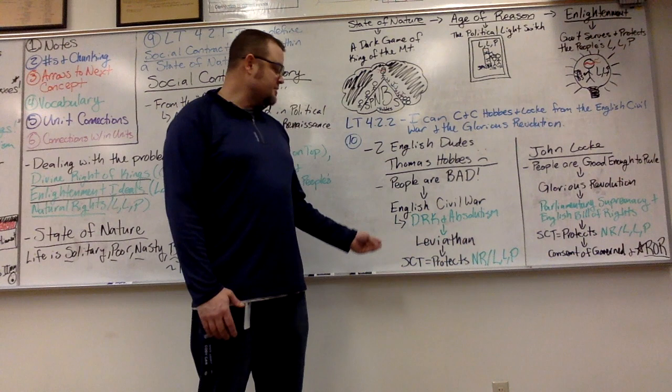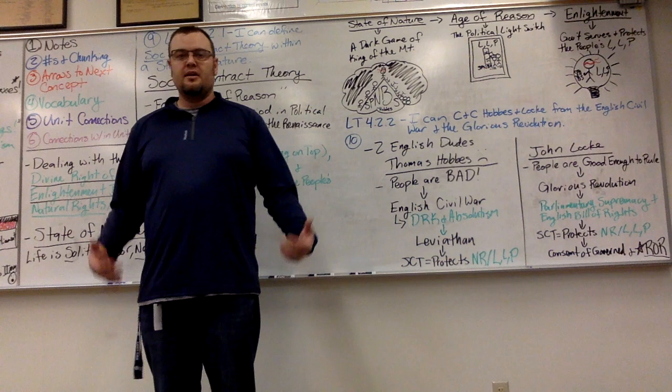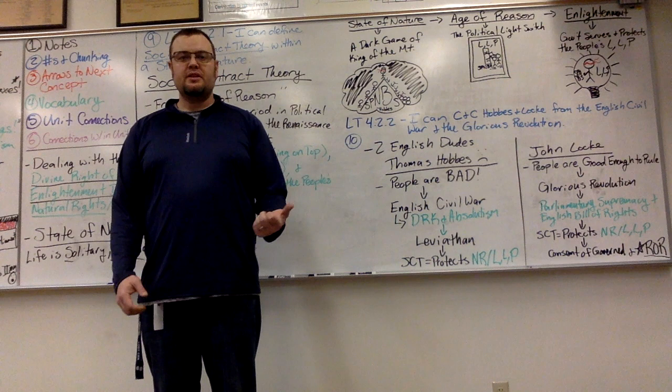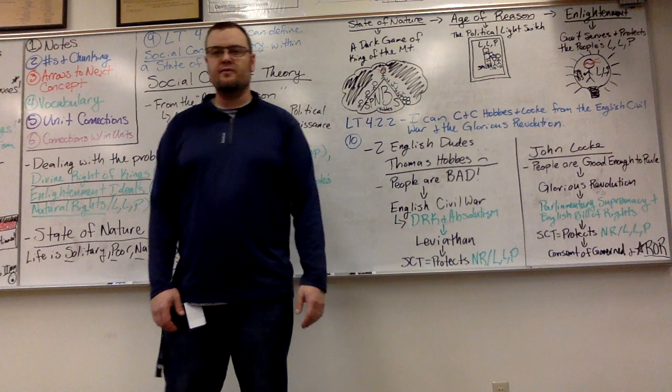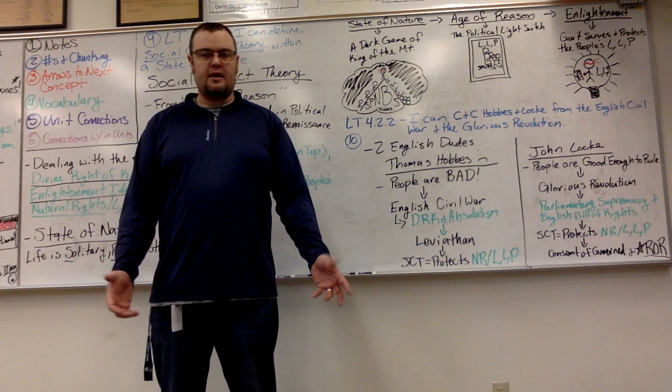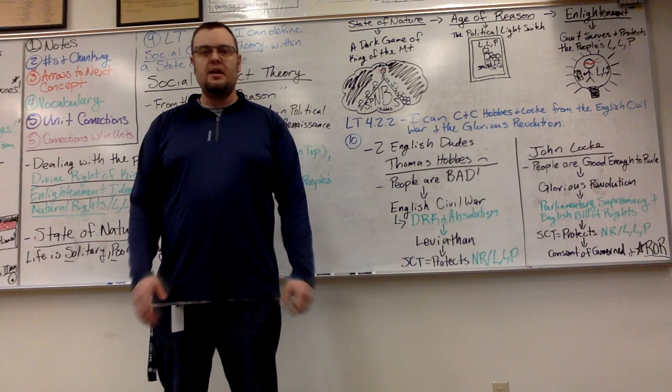When he talks about Leviathan in the social contract, he's talking about a huge governor or monarch. If you look at the book that he wrote on this subject, it's called Leviathan, which actually comes from the Bible. It's in the book of Job. And it's a reference to a huge sea monster. It was the Leviathan, and it was so big that it was uncontrollable.